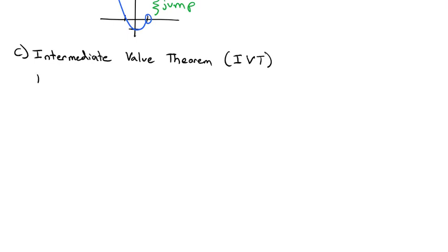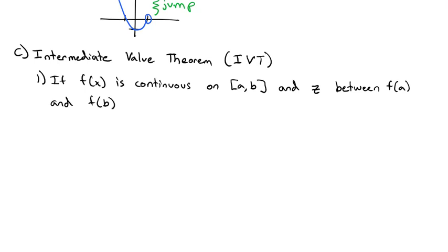And what the Intermediate Value Theorem says is that if a function f of x is continuous, if the function always equals its limit on some interval from a to b, and there's another number z that's between f of a and f of b, then there exists another number, we'll call it c, that is in a b, such that f of c will equal that z. Okay, that definition is really weird. Let's draw a picture that really illustrates what this means.